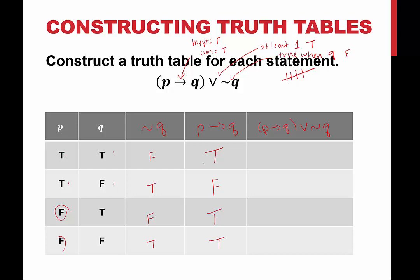Now putting this whole thing together — we have part one and part two, the two columns we're looking at for this final column. We have true or false — that is true. True or true is true. False or true is true. True or false is true. And this would be the truth table. It looks pretty cool because the final column is all trues.